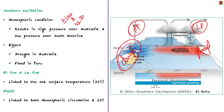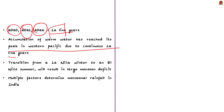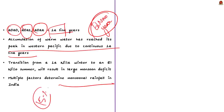El Niño and La Niña are phenomena linked to sea surface temperature, while El Niño South Oscillation (ENSO) is linked to both the atmosphere and sea surface temperature. The past three years — 2020, 2021, and 2022 — were La Niña years. According to the article, the accumulation of warm water has reached its peak in the western Pacific due to continuous La Niña years. There is a widespread chance that the next year will be an El Niño year. If there is a transition from a La Niña winter to an El Niño summer, there will be a large monsoon deficit of up to 15%.